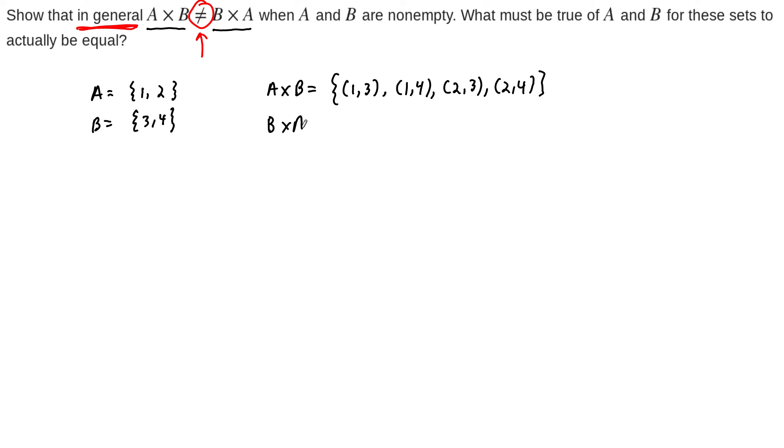Similarly, if we write down B cross A, now the order matters. The order matters. So now we have to go in the reverse order for the ordered pairs. So the elements of this set are (3,1), (3,2), (4,1), and (4,2).